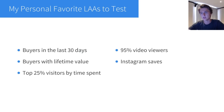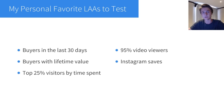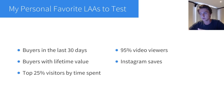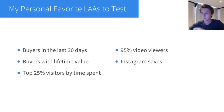My personal favorite lookalike audiences to test with this strategy: number one is buyers in the last 30 days. I also like testing buyers with lifetime value, which creates a slightly different lookalike. Another is top 25% visitors by time spent — view-content lookalikes don't work as well, but top 25% by time spent gives a much more targeted custom audience. I also really like 95% video viewers — it's easy to build enough views for this audience and it usually performs very well. Lastly, Instagram saves work really well, especially if you're doing influencer marketing on Instagram.